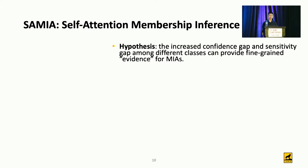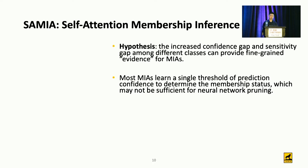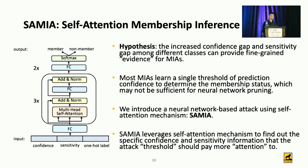Motivated by these observations, we propose a new membership inference attack called SEMI — Self-Attention Membership Inference attack. We hypothesize that the increased confidence gap and sensitivity gap among different classes can provide strong evidence for membership inference. Most existing attacks learn a single threshold on prediction confidence, which may not be sufficient for neural network pruning. We introduce a neural network-based attack using the self-attention mechanism, widely used in NLP, to identify specific confidence and sensitivity information that the attack should pay more attention to.